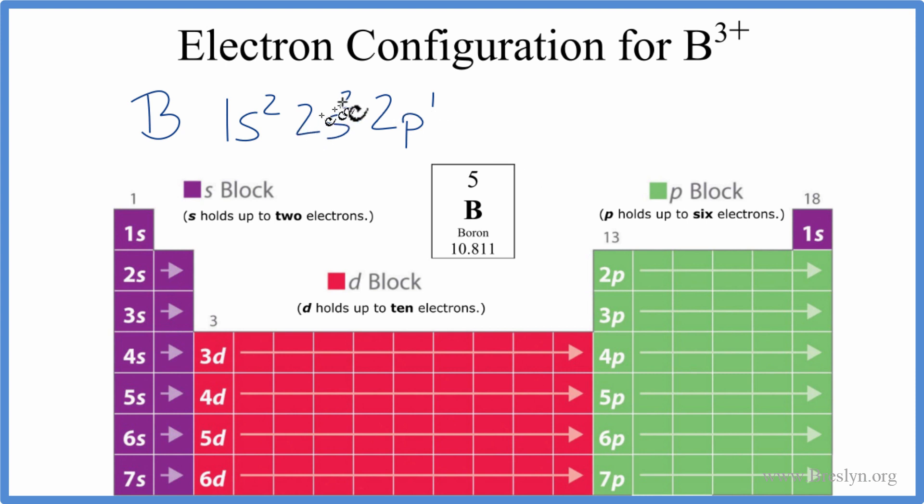So, we'll get rid of three electrons. There's two there, and one there. And now this is the electron configuration for B3+. So, by figuring out the number of electrons we had for boron, and then we lost three of them to become this B3-plus ion,